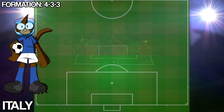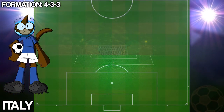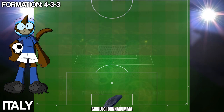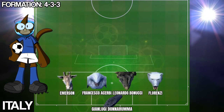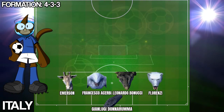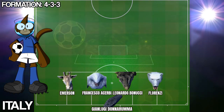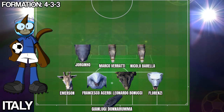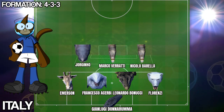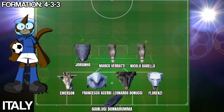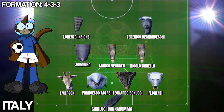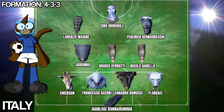Italy have gone for a 4-3-3 formation today with Gianluigi Donnarumma in goal, a back four of Emerson, Francesca Assibi, Leonardo Bonucci and Florenzi at the back. With a midfield three of Jorginho, Marco Verratti and Nicola Barella. Up front we've got Lorenzo Insigne and Federico Bonacci supporting Ciro Immobile.